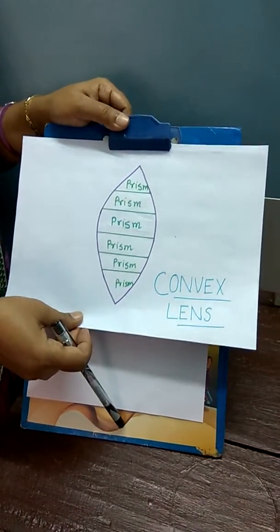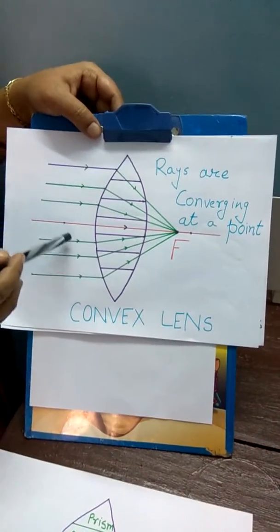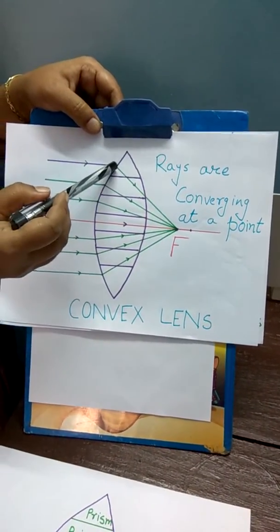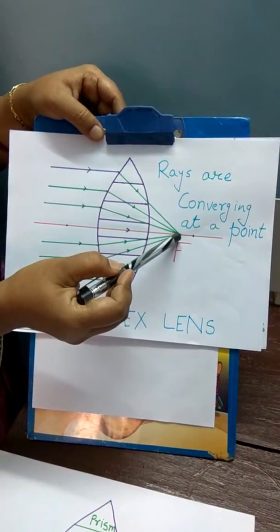In the next diagram we will see how it happens. You can see these are the parallel rays of light falling on the surface of a lens and they are converging at a point.